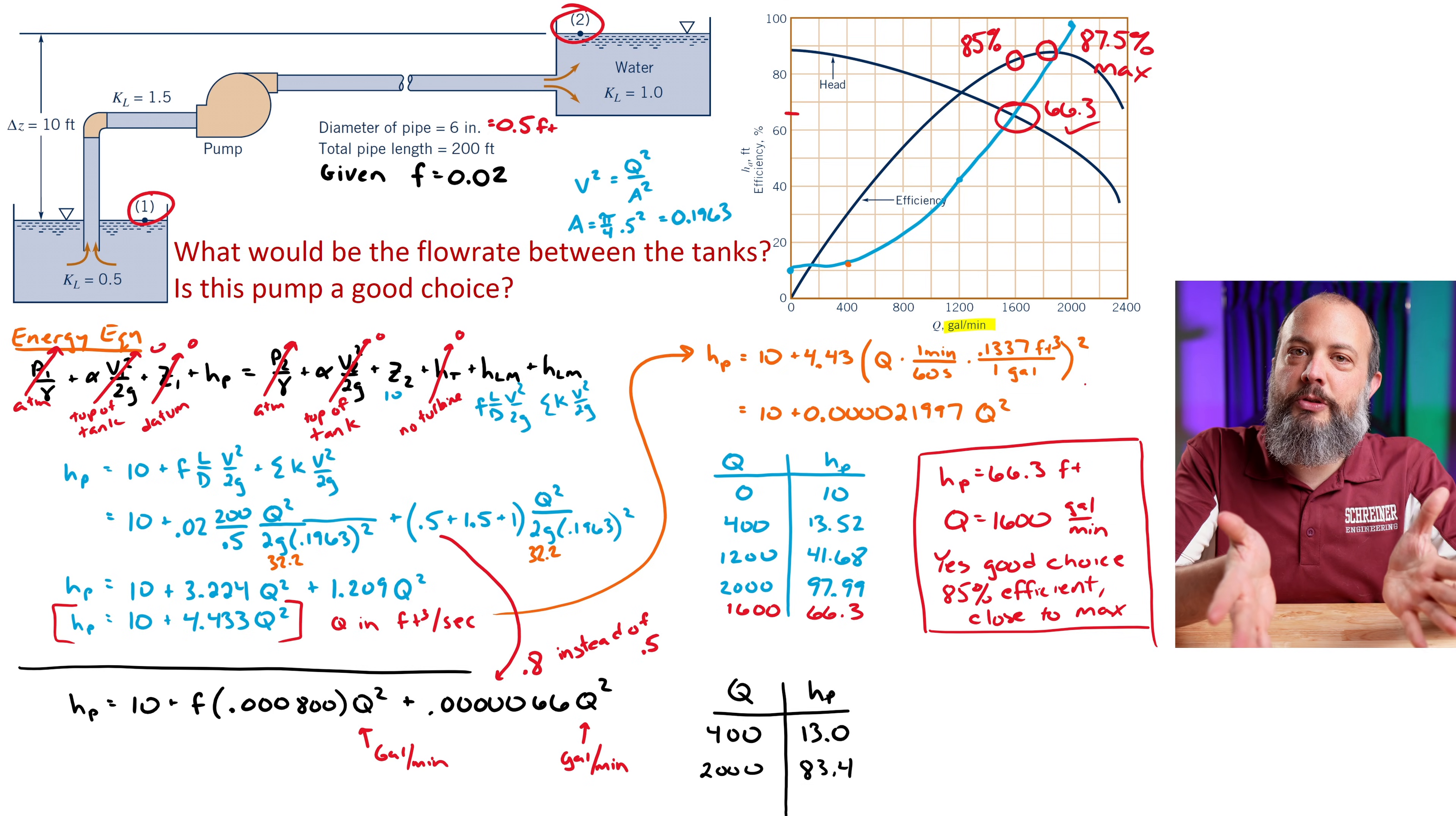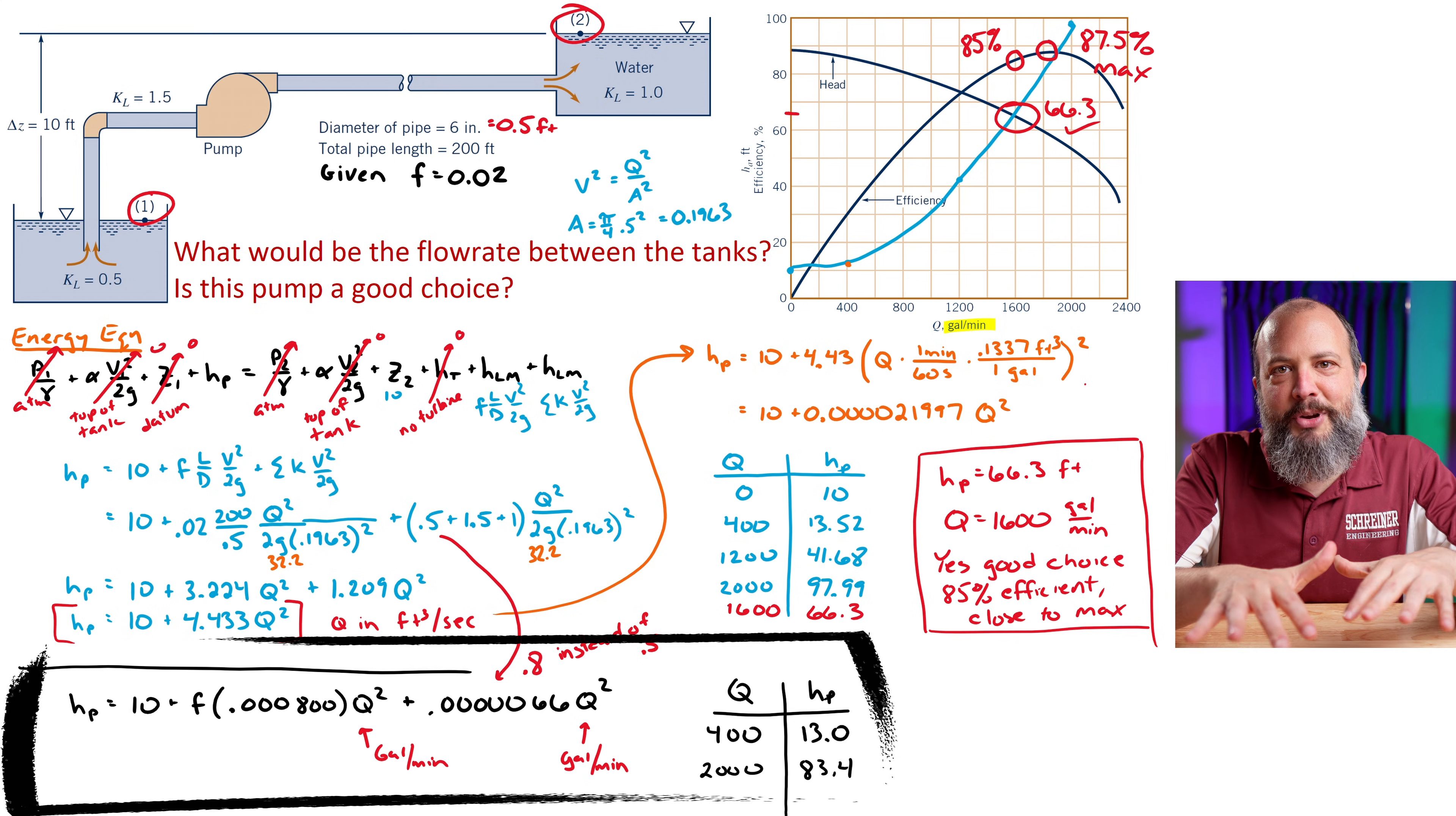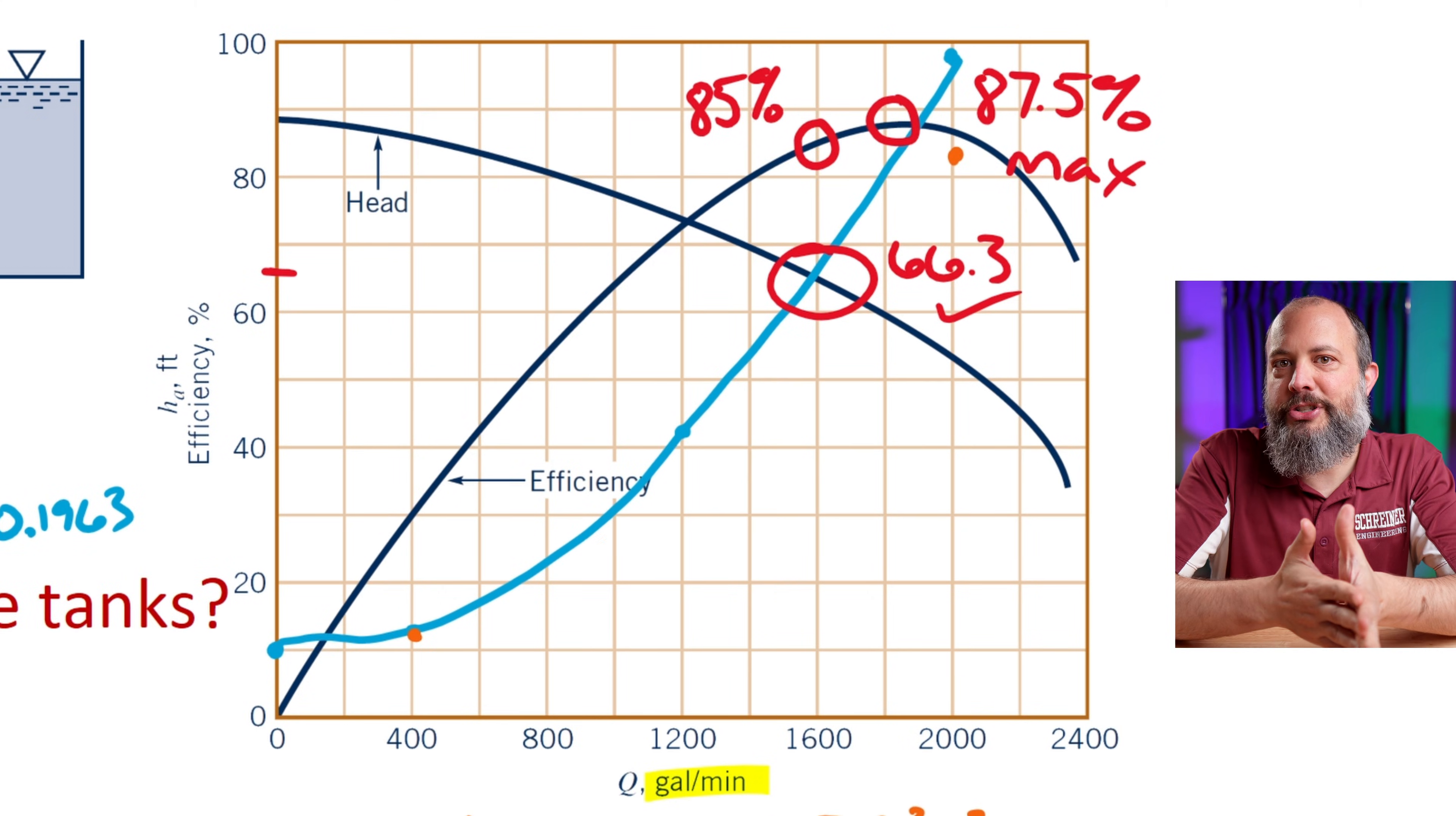The last minor loss source will be the exit, right? The sudden expansion into the tank. And since that's square edged, this table that I have in my book here shows that a minor loss K value of 1 does work for that. So if I do a whole bunch of calculator work with all of mostly the same numbers, but I have a different factor for F, and I'm also using a different factor of 0.8 for this minor loss at the re-entrant entrance, I get a slightly modified version of the pump head equation. For the value of Q at 400, I get 13 feet. And for the Q value of 2,000, where I solve the other friction coefficient, I get a value of around 83 feet.